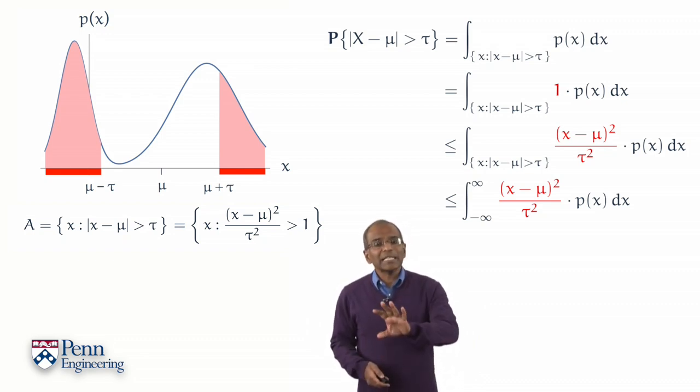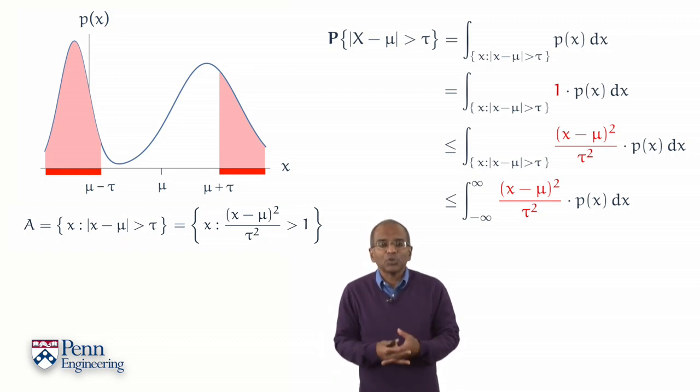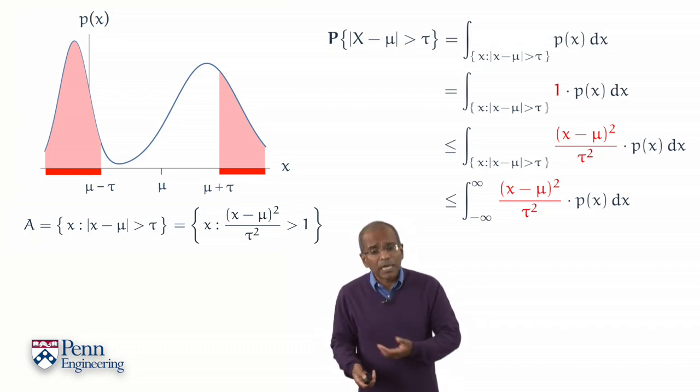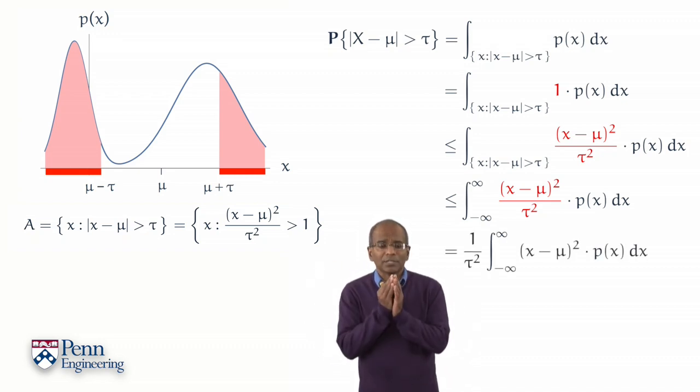Let's observe that in the denominator, the deviation squared, tau squared, is a constant. It does not depend upon x, the variable of integration, and can therefore come out of the integral. So if we pull it out, we've got now a reworked integral.